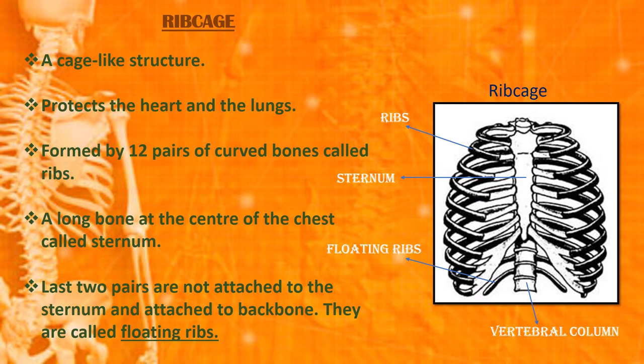The rib cage protects the heart and the lungs. However, the last two pairs of ribs are not attached to the sternum and are attached to your backbone only. They are called floating ribs.